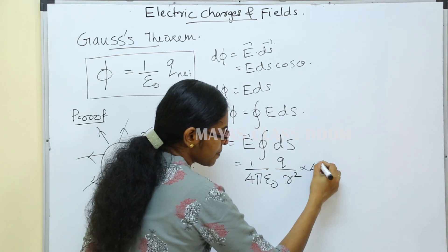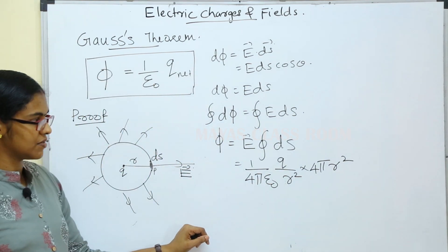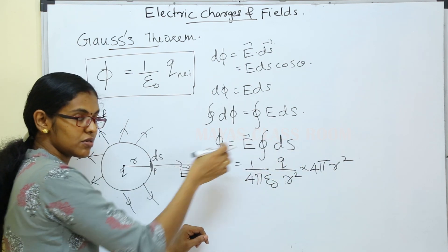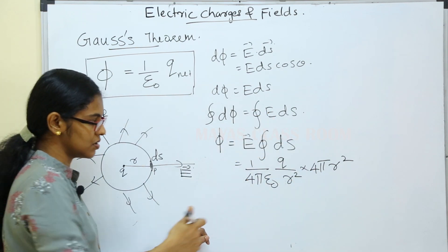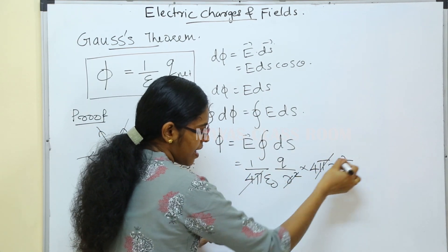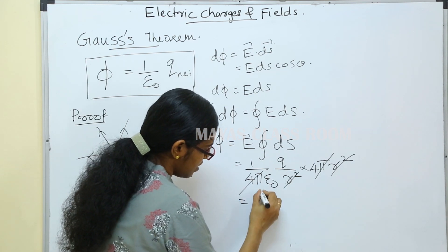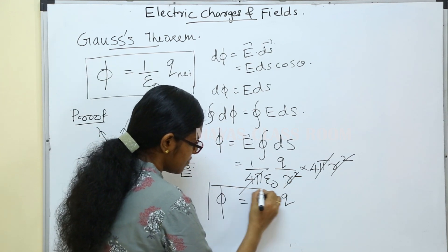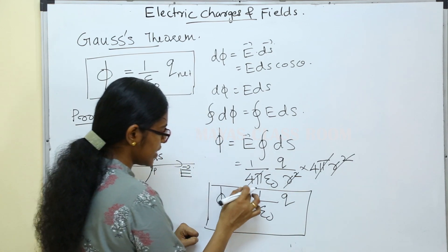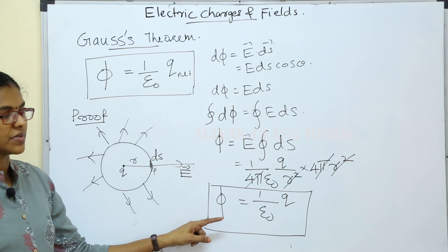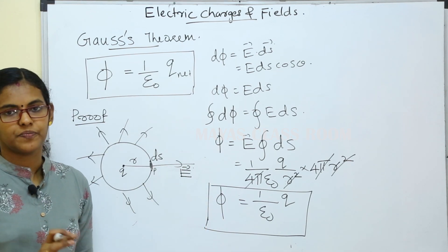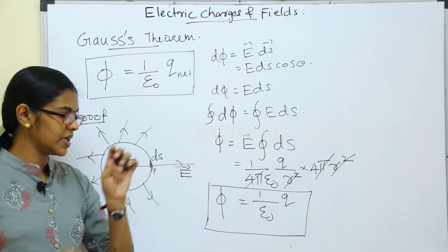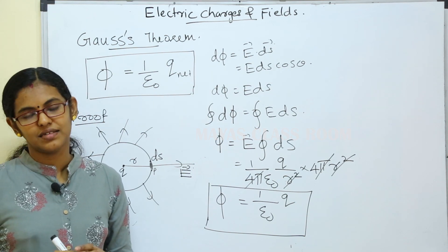The total surface area of the closed sphere is 4πr². So φ equals (1/4πε₀)(q/r²) times 4πr², which gives φ = q/ε₀, or φ = (1/ε₀) times q. This completes the proof of Gauss's theorem: the total electric flux over a closed surface equals (1/ε₀) times the total charge enclosed by the surface.